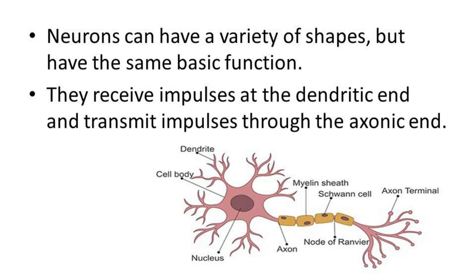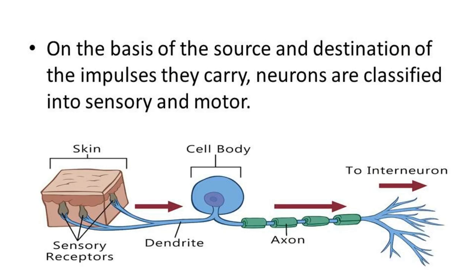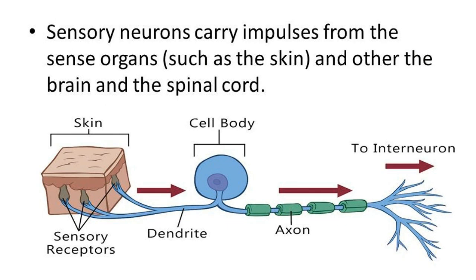Myelinated neurons conduct impulses faster than unmyelinated neurons. Neurons receive impulses through dendrites and transmit impulses through the axon. On the basis of the source and direction of the impulse they carry, neurons are classified into sensory and motor neurons. Sensory organs are present in the skin, allowing us to feel touch.